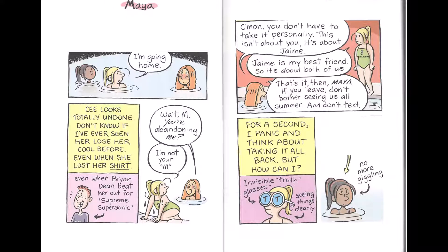Wait, M, you're abandoning me? I'm not your M. Siella tries to get her cool back. Come on, you don't have to take it personally. This isn't about you. It's about Jamie. Jamie is my best friend, so if it's about her, it's about both of us.